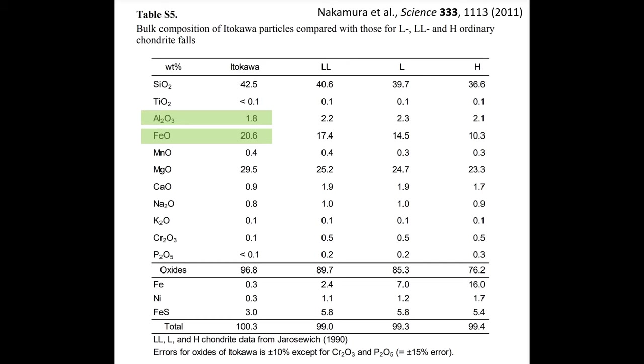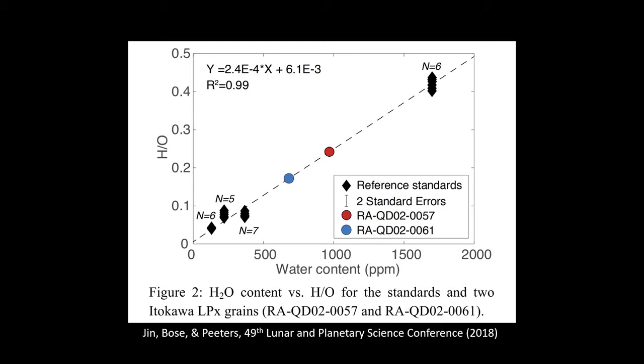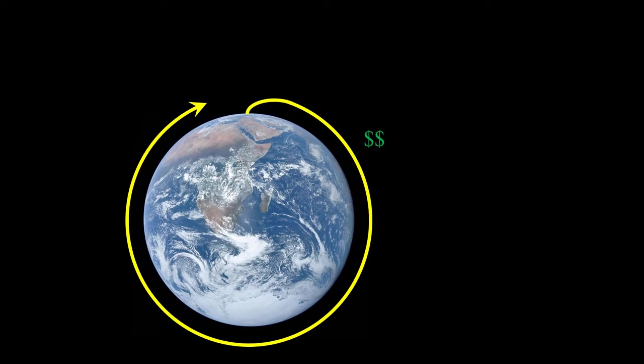Itokawa has iron and aluminum that could be used as building materials. It of course has raw stone that can be used for radiation and micrometeoroid shielding. And it has water. Not a lot of water, less than 0.1% by mass, but water. It may sound extravagant to squeeze water from rocks like that. But keep in mind, past escape velocity, anything that you don't have to lift from Earth is literally worth its weight in gold.